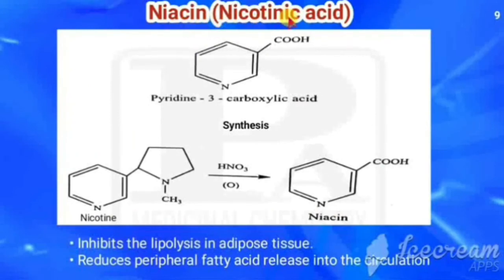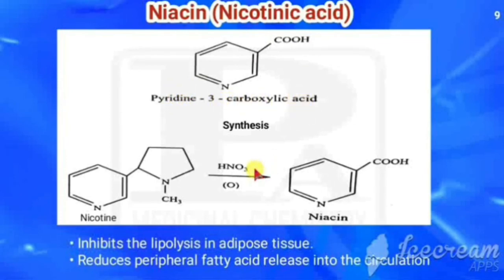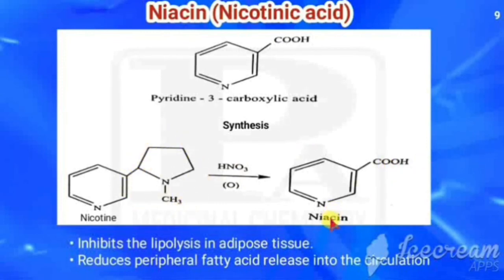The last drug is niacin or nicotinic acid. It has a pyridine nucleus with a carboxylic acid at position 3, so it is called pyridine-3-carboxylic acid. It can be synthesized from nicotine by oxidation with nitric acid, which oxidizes the side chain to give the acid. Its use: it inhibits lipolysis in adipose tissue and reduces peripheral fatty acid release into the circulation. That concludes anti-hyperlipidemic agents.